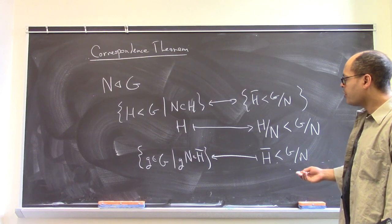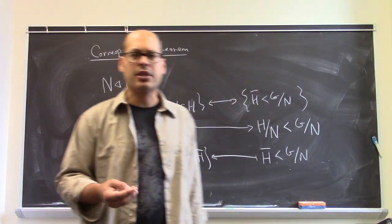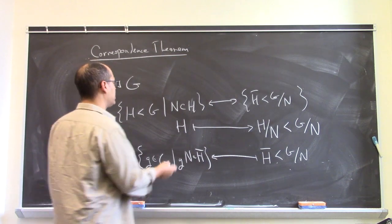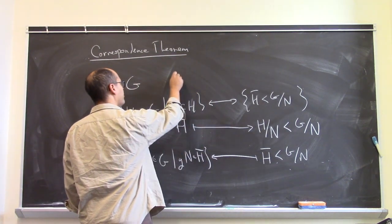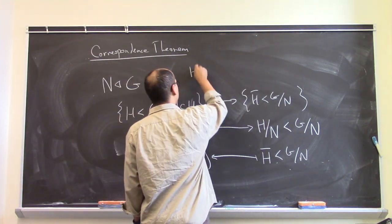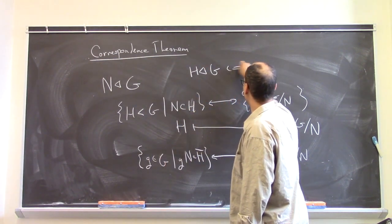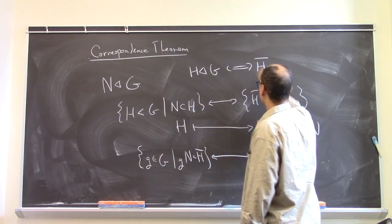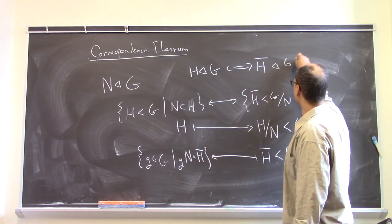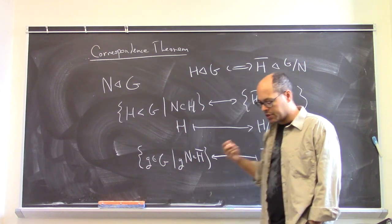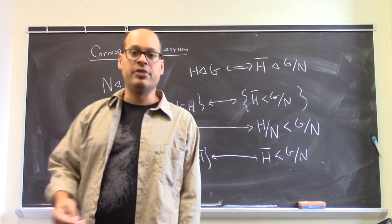And furthermore, another important thing to note is that this bijection preserves normality. So that is to say, if H is normal in G containing N, that's going to happen exactly when the corresponding thing over here is normal inside of G mod N. This is also fairly routine to verify.